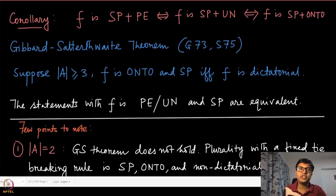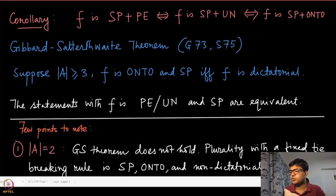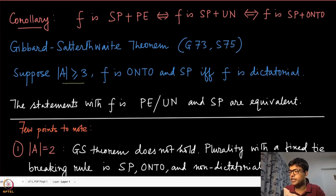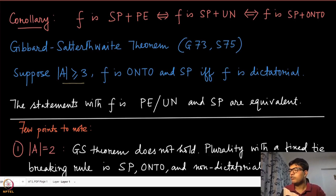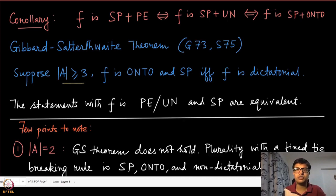Let us now start proving the Gibbard-Satterthwaite theorem. As we have mentioned in our previous module, it says that if you have three or more alternatives, then every social choice function that is onto and strategy-proof implies and is implied by the fact that this social choice function is dictatorial. We have also seen a corollary which says that under strategy-proofness, all these notions of Pareto efficiency, unanimity, and ontoness are the same.